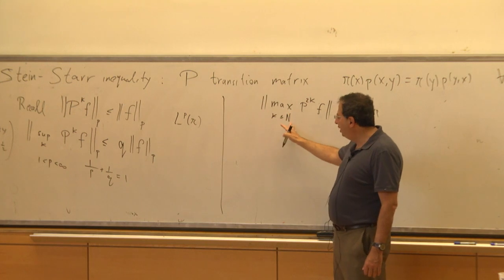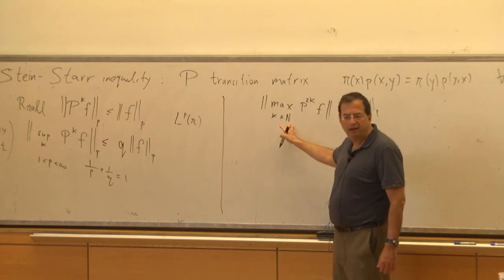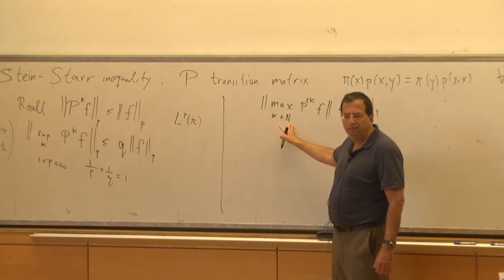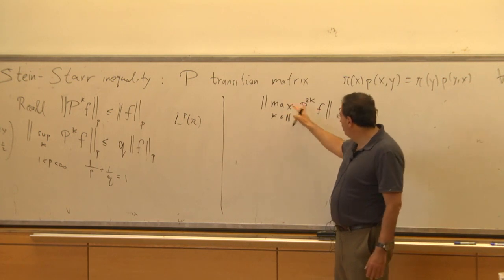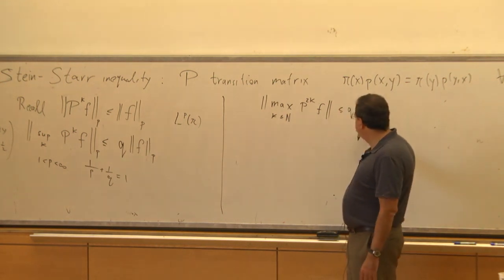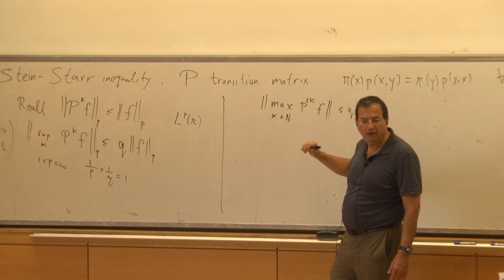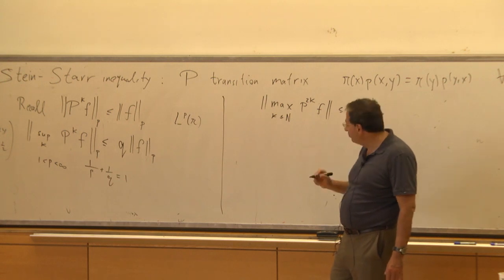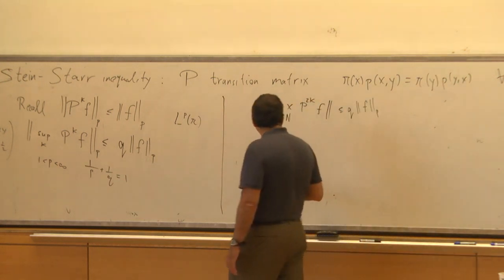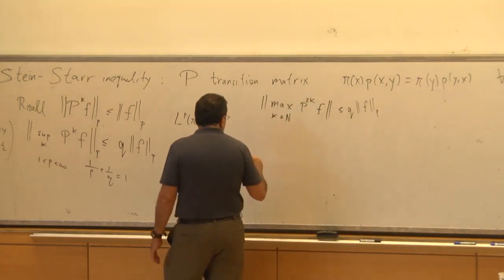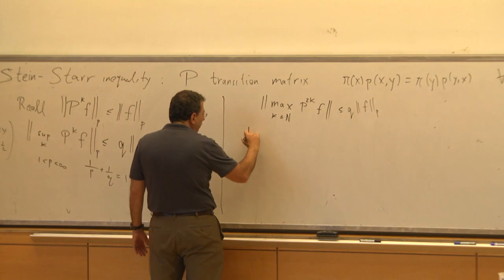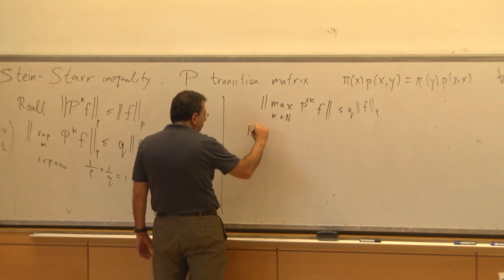So instead of taking the supremum over all K, we'll take a max over K bounded by capital N. Since the bound on the right doesn't depend on N, you can pass to the limit. The key thing is: what is P^{2K} of F at the point x?